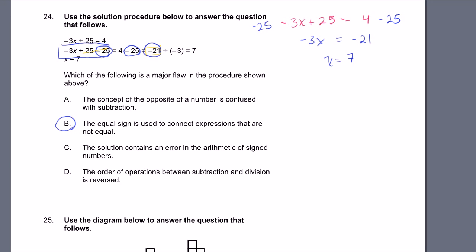Let's look at the other choices. The solution contains an error in the arithmetic of signed numbers - no, the solution is arithmetically correct. D, the order of operations between subtraction and division is reversed. I really don't see that. So my choice would be B. The equal sign, this right here, does not equal this right over there.